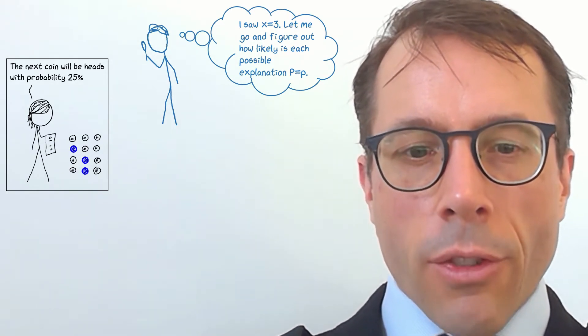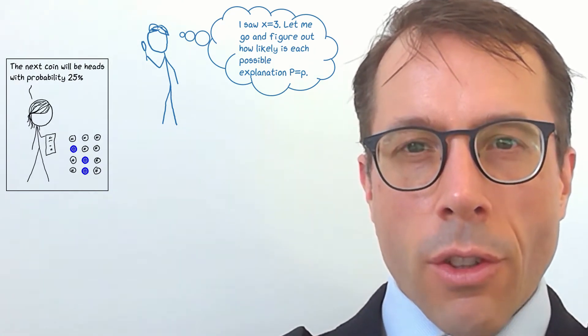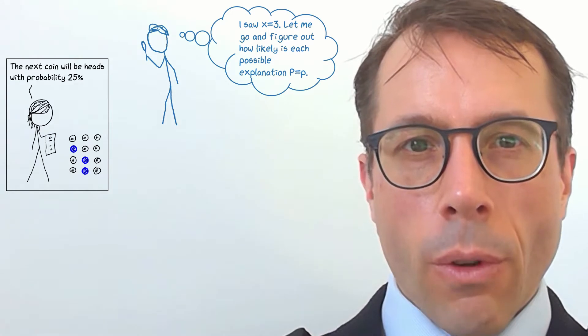So a Bayesianist is like a detective. They say, here is the data I saw, what are the likely explanations for it?